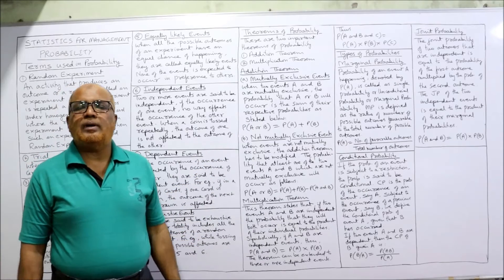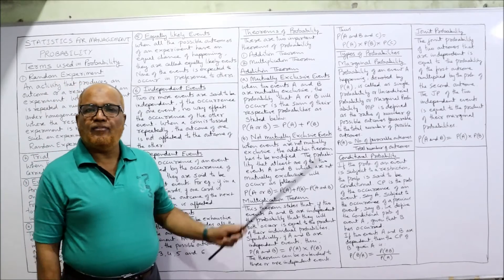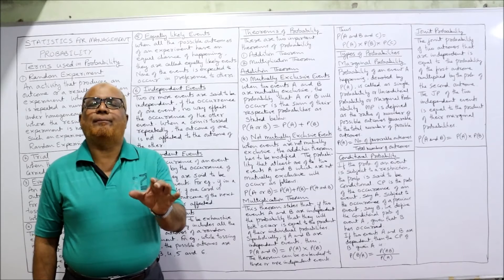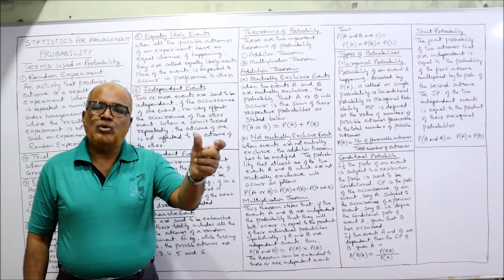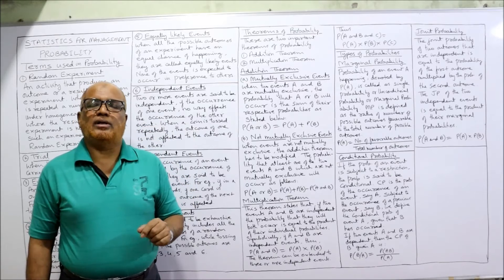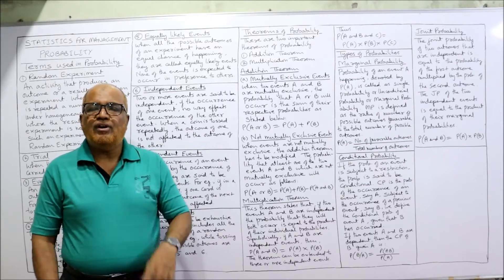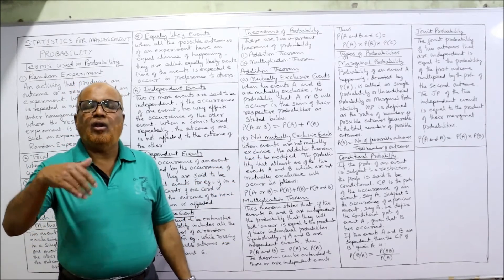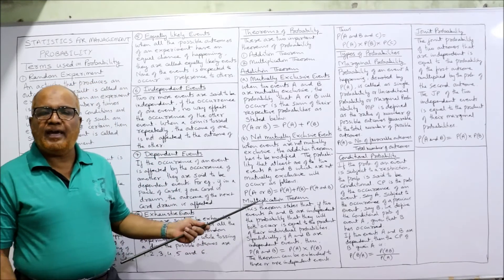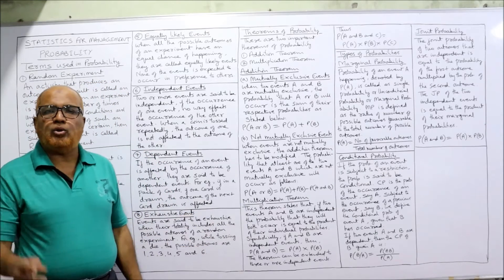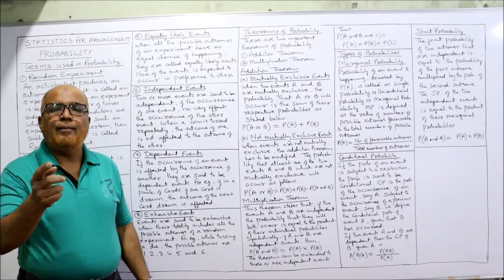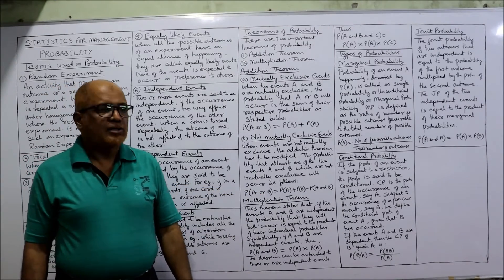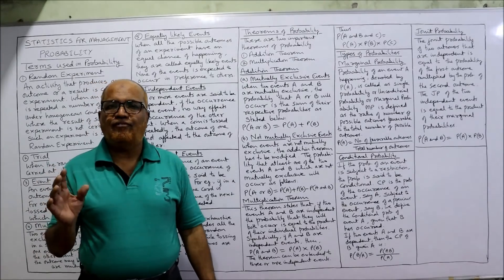For not mutually exclusive events, the formula is slightly modified. Before applying the addition theorem, you must see whether events are mutually exclusive or not. If mutually exclusive: P(A or B) = P(A) + P(B). If not mutually exclusive: P(A or B) = P(A) + P(B) − P(A and B). These are the two addition theorem formulas.